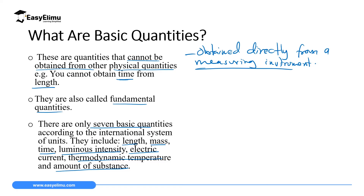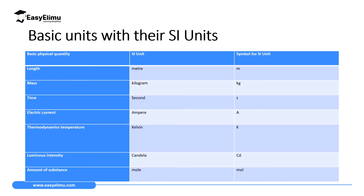The seven basic physical quantities have specific SI units, and each SI unit has a specific symbol. I want you to be very keen on the way I have indicated the SI units and the symbols. First, they are written in singular — they are not written in plural. Then there are those with capital letters and those with small letters.